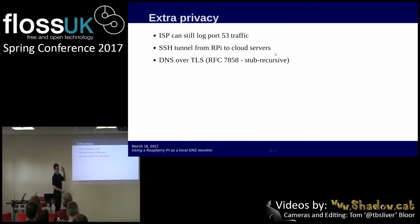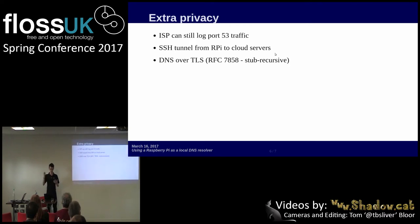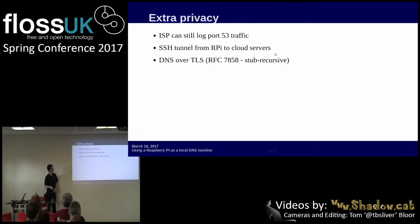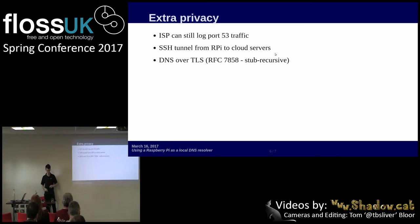For extra privacy: your ISP can still log everything going out on port 53 if they want to, but they can't just look at their DNS server logs — they've got to make a bit more effort. What you can do is run this Raspberry Pi on your network with an SSH tunnel out to, say, an Amazon instance, and route all your DNS queries out through that, so your ISP in theory never sees your DNS traffic, which is quite nice. There is also a DNS over TLS RFC, although at the moment that is only between your computer and your local resolver — not between you and the end server that actually answers the query.